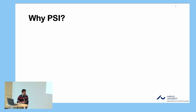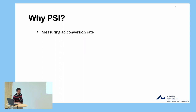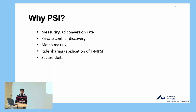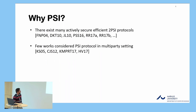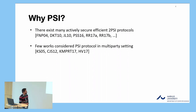So why PSI? As already mentioned, this is a really practically-motivated problem and it comes in many real-life scenarios. For example, measuring ad conversion rate was mentioned, but there are also many other applications like private contact discovery, matchmaking, ride-sharing, secure sketch, and many other things. Much work has been done on this two-party PSI primitive, and specifically also on actively-secure two-party PSI.